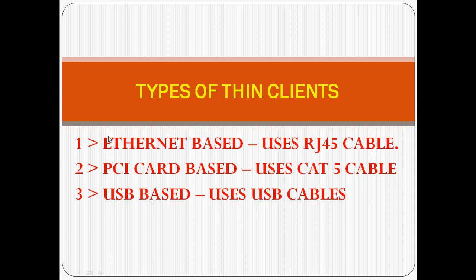The first type is internet or network-based, which uses an RJ45 cable for networking. The second type is PCI card-based, which uses a CAT5 cable and a PCI card inserted in the CPU. The third type is USB-based, which uses a USB cable, but it has the limitation that the distance between computers must be very small.